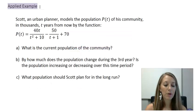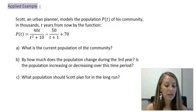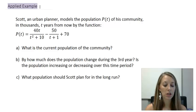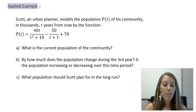I have this example here. Scott, an urban planner, models the population P(T) of his community in thousands, T years from now, given by the function P(T) = 40T / (T² + 10) − 50 / (T + 1) + 70. We have three questions: What is the current population? How much does the population change throughout the third year — does it increase or decrease? And what population should Scott plan for in the long run?